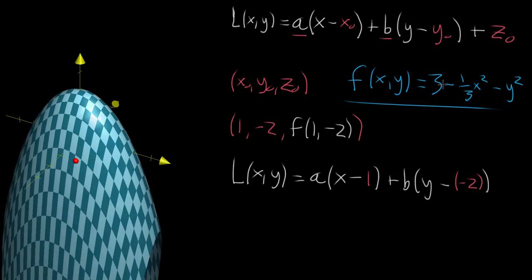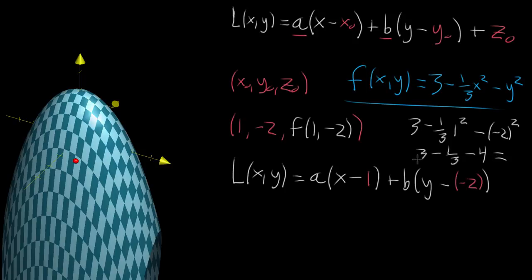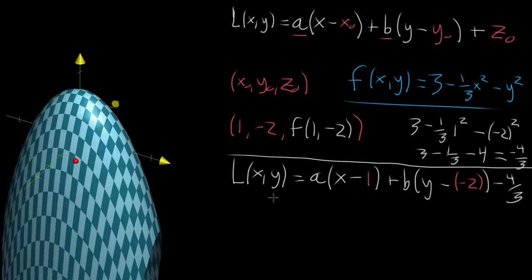Let's evaluate f(1, -2). Plugging in: three minus one-third of one squared minus negative two squared equals three minus one-third minus four. Three minus four is negative one, minus another third is negative four-thirds. So that's what we add to the whole thing — we add negative four-thirds. But we still don't know what A and B are; those are things that we need to fill in.